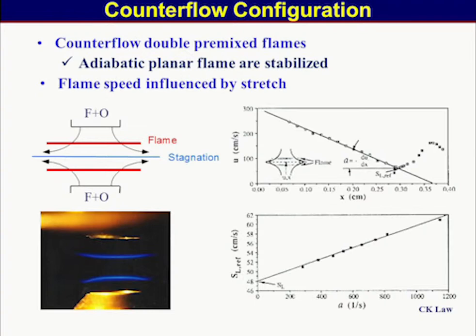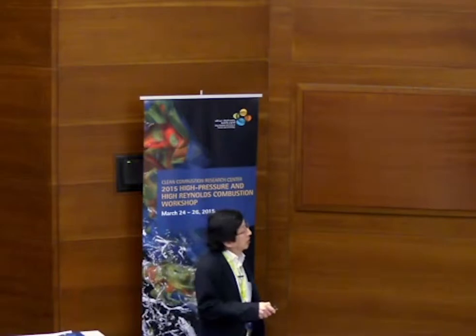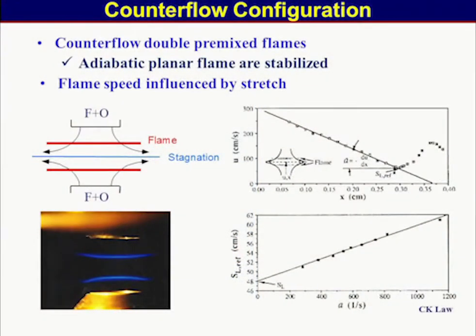In counter-flow configuration, we can establish a double premixed flame that is adiabatic and along the stagnation plane. Flame speed is influenced by stretch. When we measure the velocity from the stagnation, it decreases, reaches a minimum, and goes up by gas expansion approaching the stagnation plane. The flame speed is a function of stretch rate — this is one of the standard methods for determining laminar burning velocity by extrapolating to zero stretch.